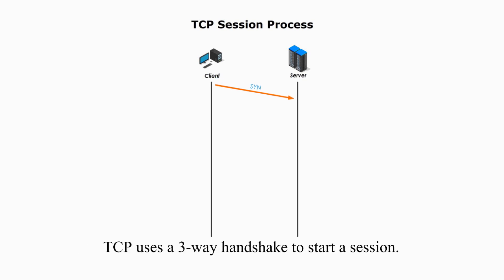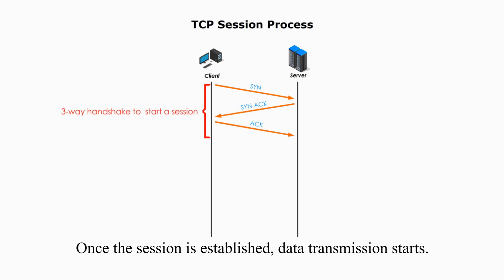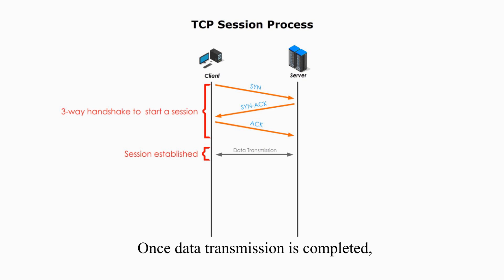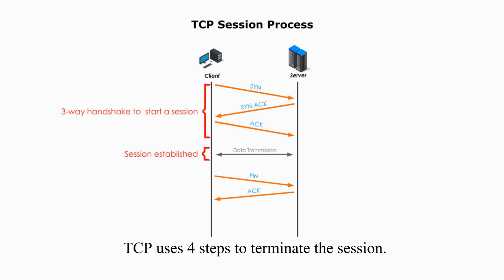TCP uses a three-way handshake to start a session. Once the session is established, data transmission starts. Once the data transmission is completed, TCP uses four steps to terminate the session.